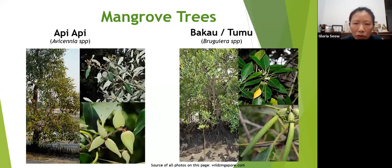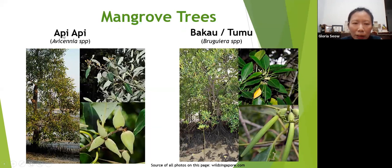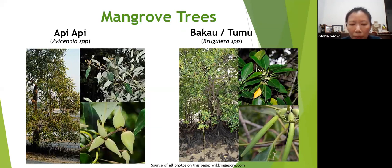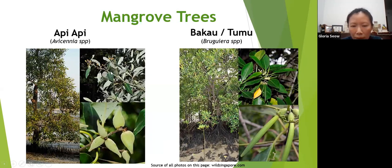One of the most common mangrove trees is Avicennia, also called api-api — a Malay word where api means fire, because these mangrove trees are display grounds for fireflies. At night fireflies come and flash there, and you can take firefly tours. You can sometimes see them in Singapore too. This Avicennia is the one with pencil roots. Avicennia alba has white leaves underneath, a teardrop-shaped fruit, and exhibits cryptovivipary where the seeds sprout inside but remain hidden within the fruit wall.